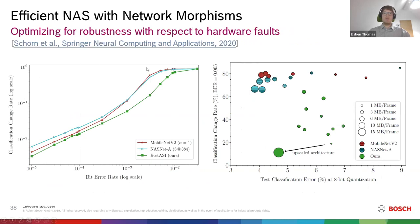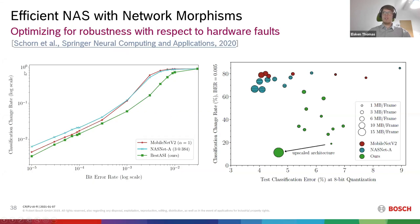A follow-up paper looked at robustness of neural networks with respect to hardware faults — related to safety. We ran simulation experiments randomly flipping bits in activation functions as a robustness measure, then formulated an objective function measuring this robustness and plugged it into our method. The result, shown in green, demonstrates that directly optimizing for hardware-fault robustness produces networks much more robust than MobileNet and NASNet competitors.